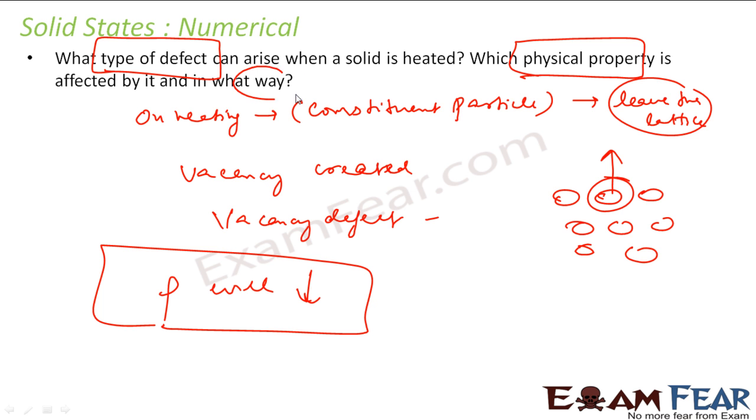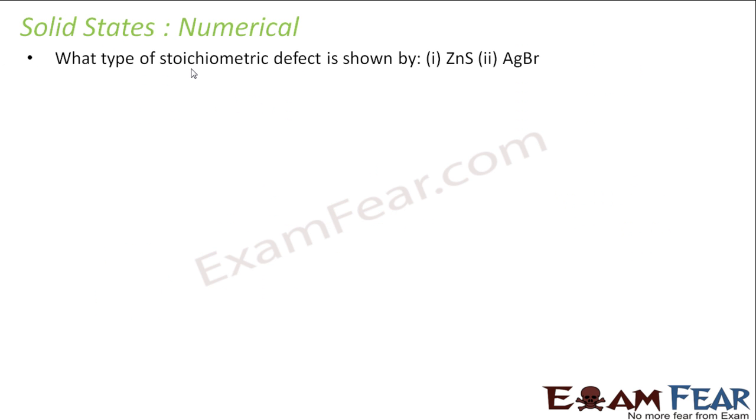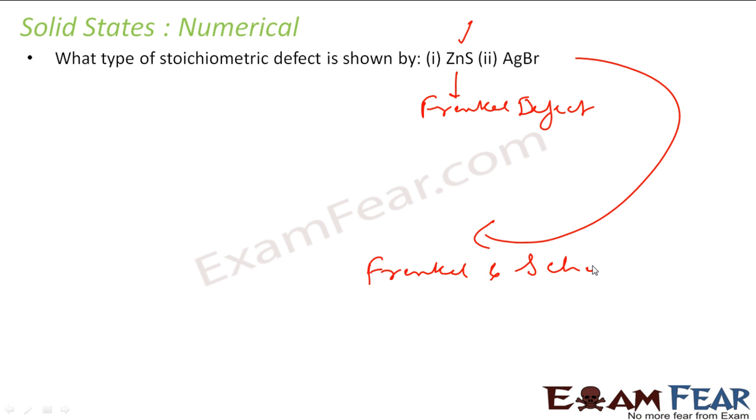The next question is: what is the stoichiometric defect shown by ZnS? We have seen that ZnS shows Frenkel defects. And AgBr, I told you this is the exception, it shows both Frenkel and Schottky. Since I have explained these things, I'm not spending much time on this. If you want, you can go to the previous slides where we explained why it is showing these kind of defects.